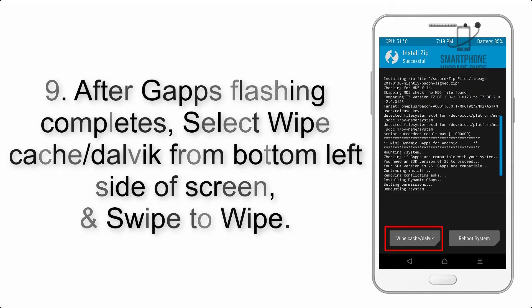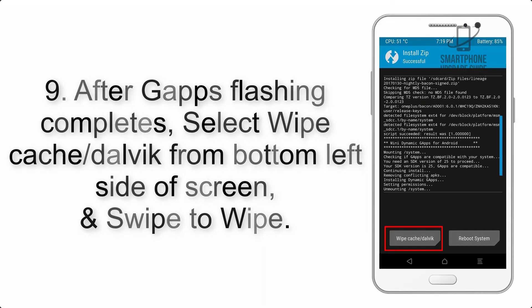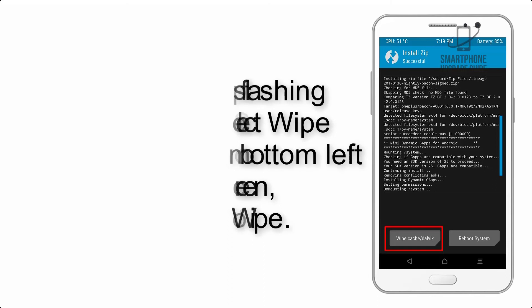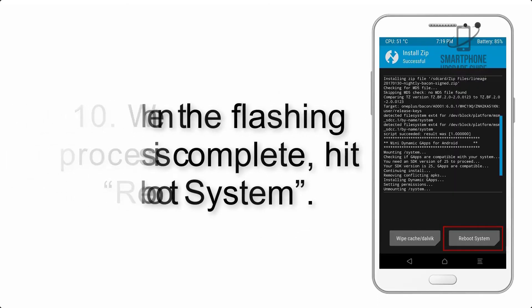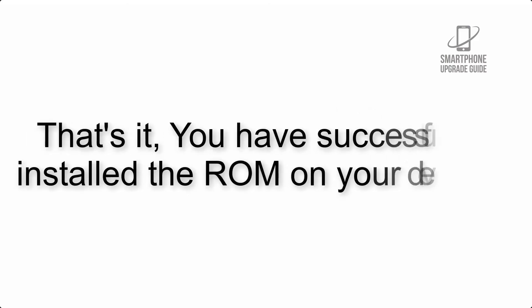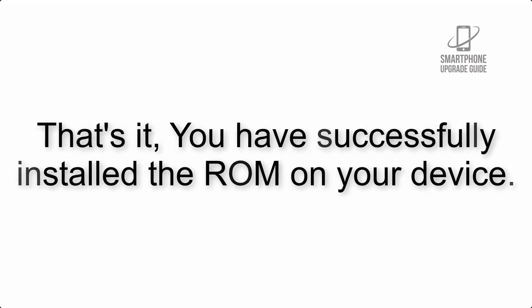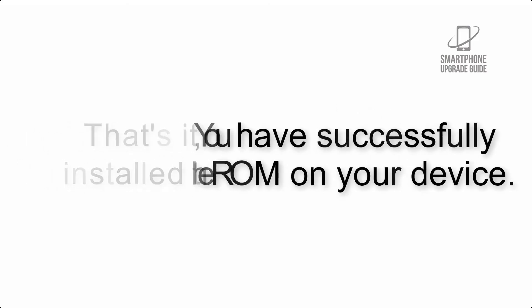Step 8: Flash the GApps zip package in the same manner. Step 9: After GApps flashing completes, select Wipe Cache and Dalvik from the bottom left side of the screen and swipe to wipe. Step 10: When the flashing process is complete, hit Reboot System. That's it — you have successfully installed the ROM on your device.